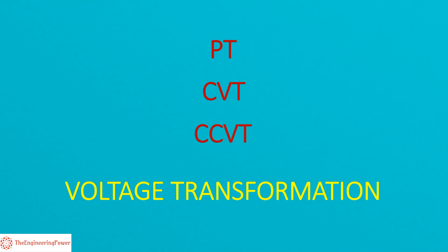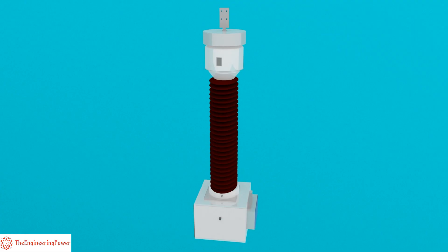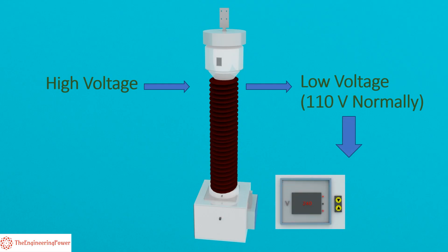We know that high voltages in substations cannot be measured directly and also cannot be fed to relays and meters. So potential transformer basically converts these high voltages to a safe value which is normally 110 volts, which can then be fed to meters and relays for measurement and protection purposes respectively.